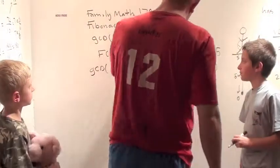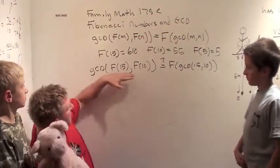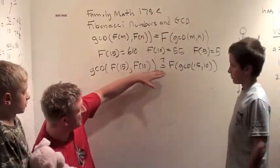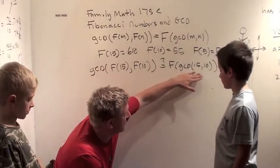Okay, so for you I picked Fibonacci 15 and Fibonacci 10, and we're going to see if the greatest common divisor of Fibonacci 15 and Fibonacci 10 equals the Fibonacci number of the greatest common divisor of 15 and 10.